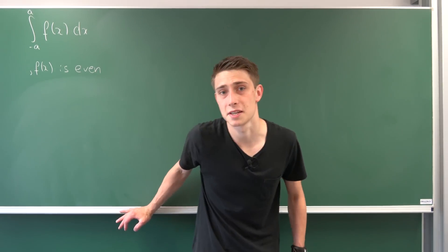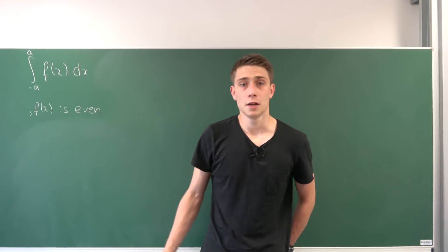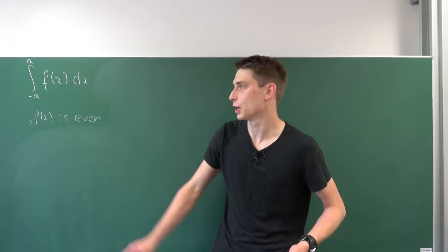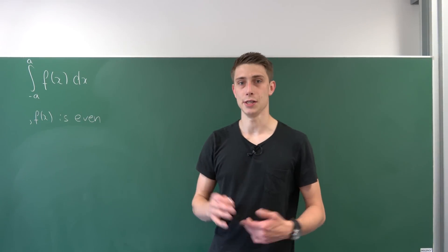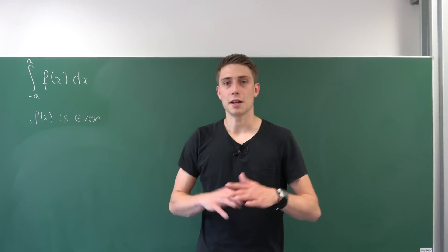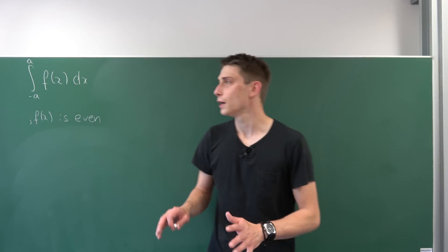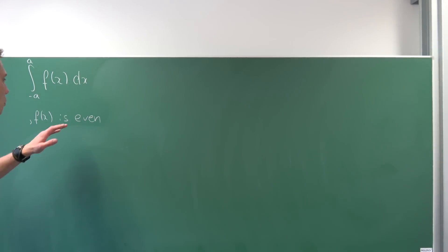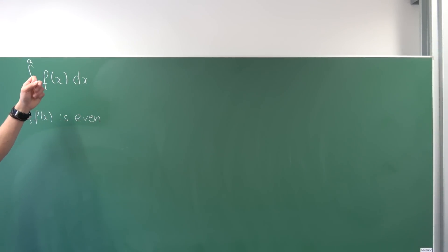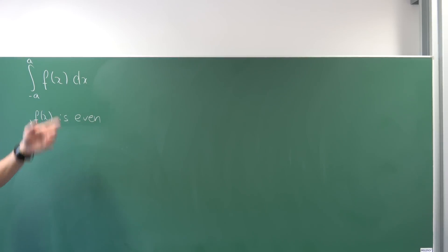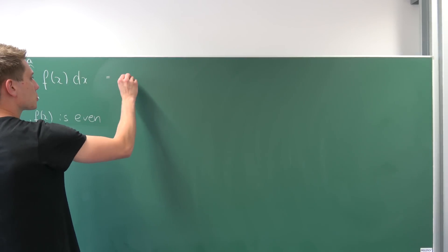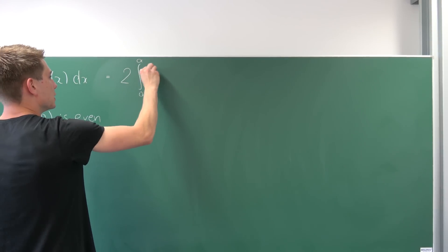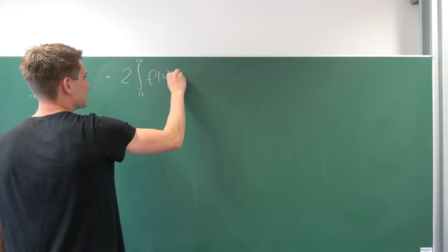Good morning fellow mathematicians, welcome back to another video. Today in this quick little video I would like to prove a little identity regarding symmetric integrals and even integrands. I have used this so often and that's why I want to make a little proof on it. What I want to show is that this is equivalent to saying we have two times the integral going from zero to a of f dx.